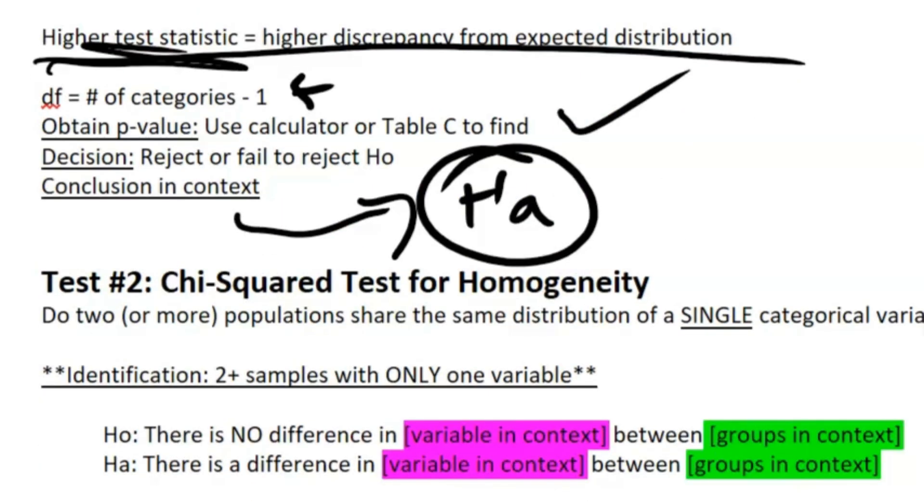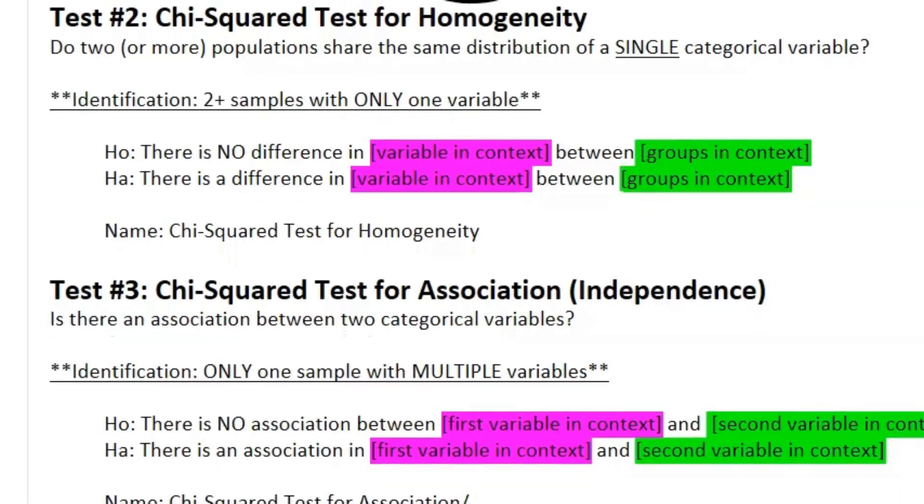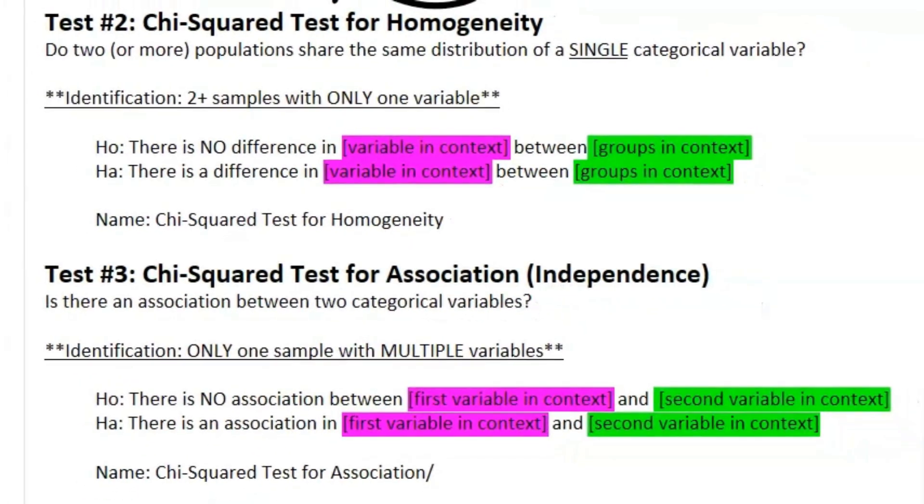Our next test is a chi-squared test for homogeneity—it's kind of hard to say, I always say homogeny, but that's not the same thing. And then our next one is a chi-squared test for association or independence.